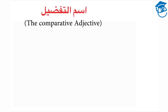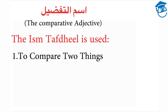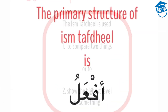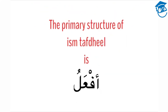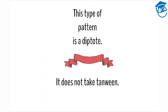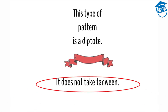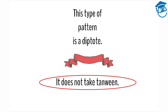The comparative adjective, or ism al-tafdeel, is used to compare two things or to show the highest level of something. The primary structure is ephalu: we add aleph with hamza at the beginning, followed by the three root letters fa, ein, and lam. On the first root letter fa we add sukun; on the second root letter ein we add feta. The third root letter takes whatever grammatical marking is necessary—in this case a dhamma. This pattern is a diptote and does not take tanween at the end, but merely one vowel marker.